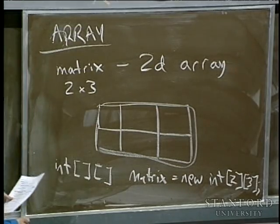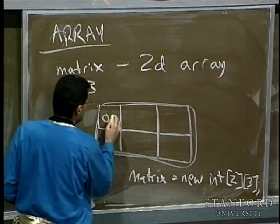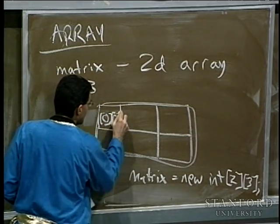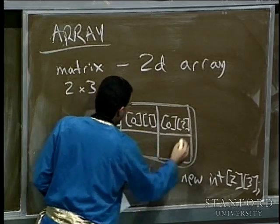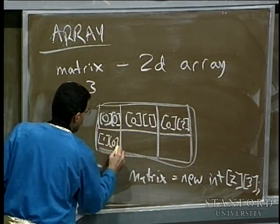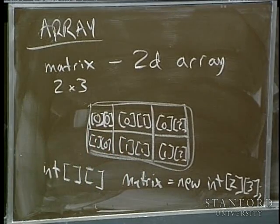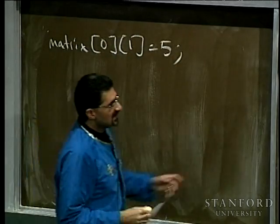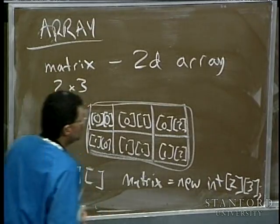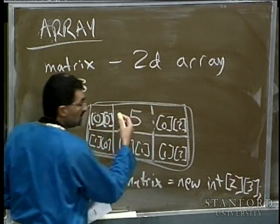When you create that, you get a two-by-three grid, and you can refer to individual elements. Element [0][0], [0][1], [0][2], then [1][0], [1][1], [1][2]. So if you say 'matrix[0][1] = 5', that takes that particular cell in the grid and sticks in the value 5. You can use it like an integer or a single element of an array.